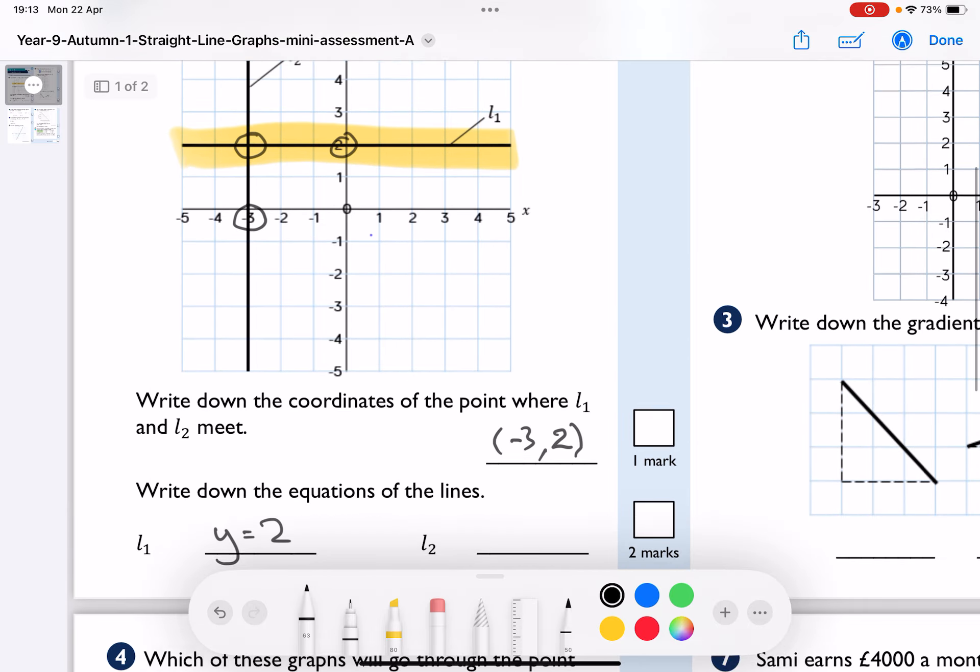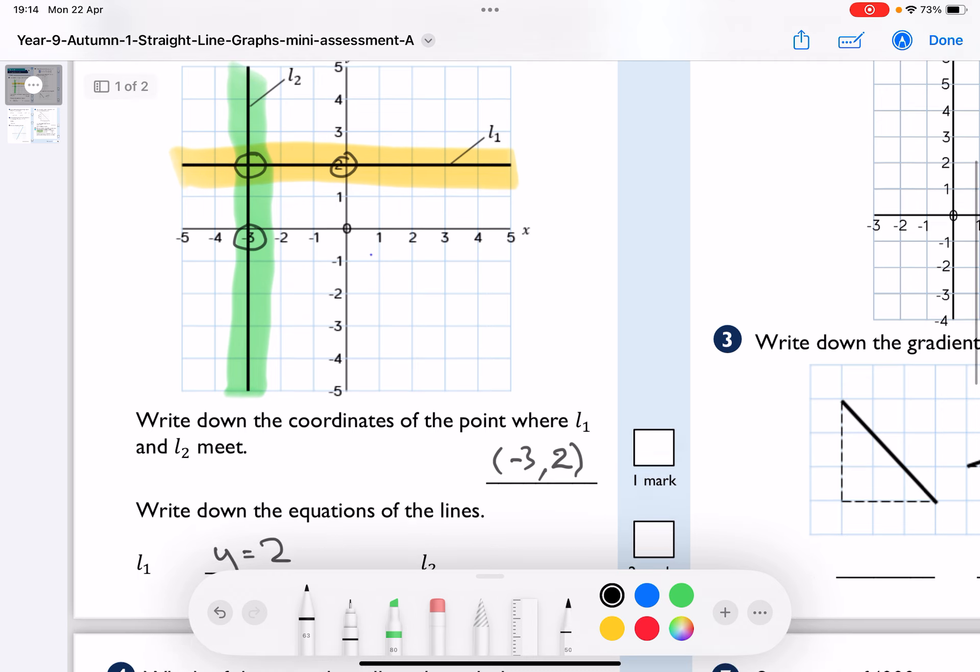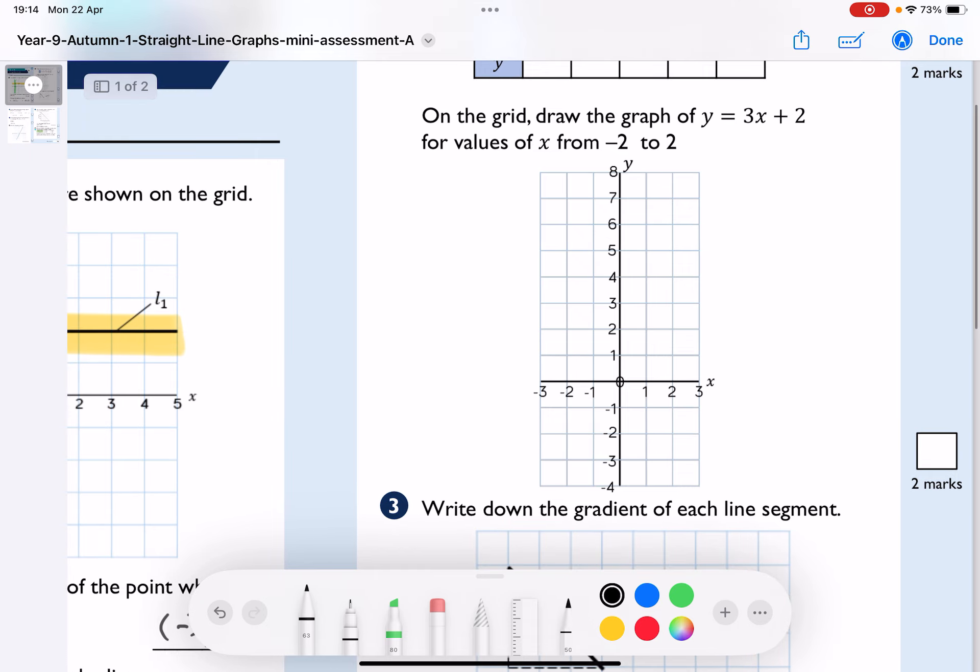And it's very similar for the L2, which is a vertical line, and this is going up and down, and you can see that going through the x-axis, it's going through x is negative 3, so that is the equation of the line, x equals minus 3. Let's go over to this one.